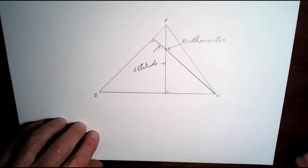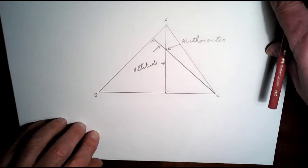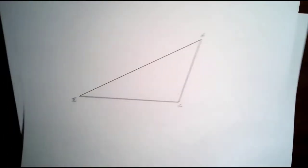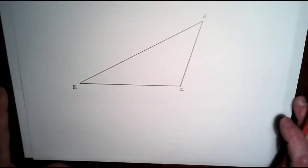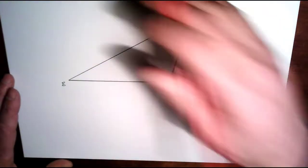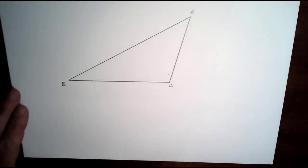So we're going to have a look at another one now, which is a triangle with an obtuse angle in it. So again, we've got to draw altitudes.